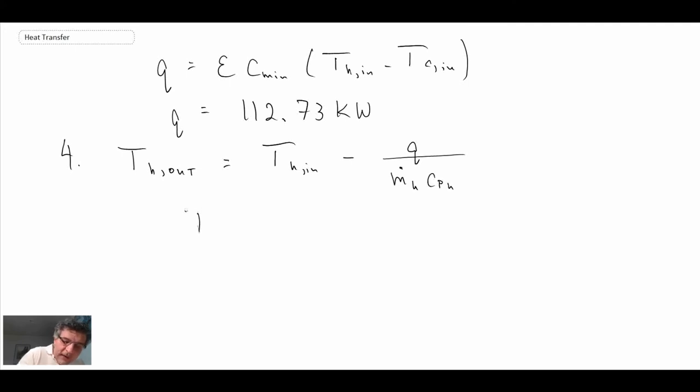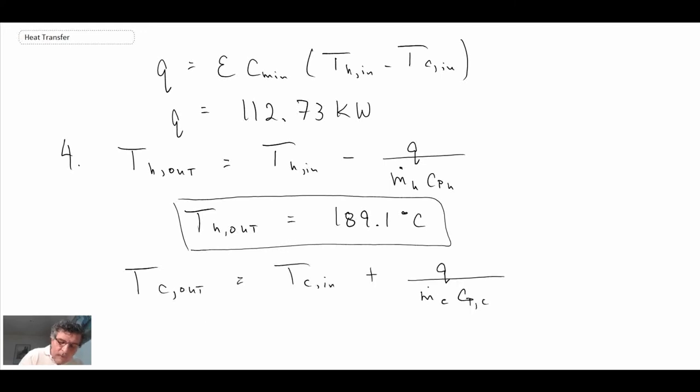We get T_hot out equals 189.1 degrees C, so it dropped a fair amount from 400 degrees. And T_C out, so the cool fluid out, is 244.2 degrees C. It's going up quite a bit from 20 degrees C up to 244 for the way that we have this particular problem.